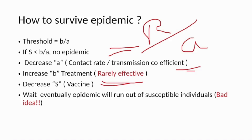Eventually, every epidemic fades out as the susceptible population decreases — there is no susceptible population left and cases gradually decrease over time. However, this natural fade-out is not the most recommended strategy in most scenarios. Thank you.